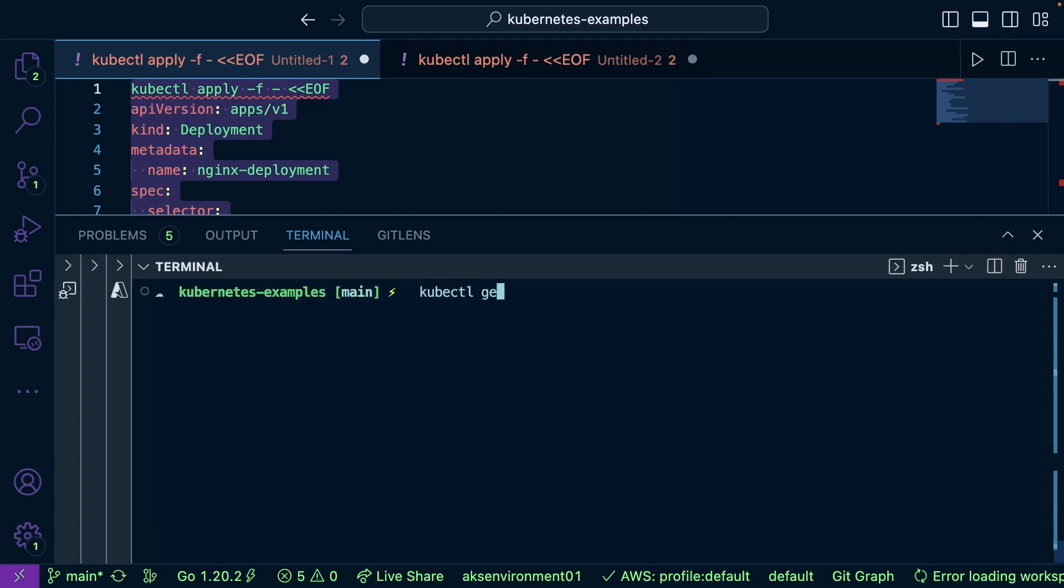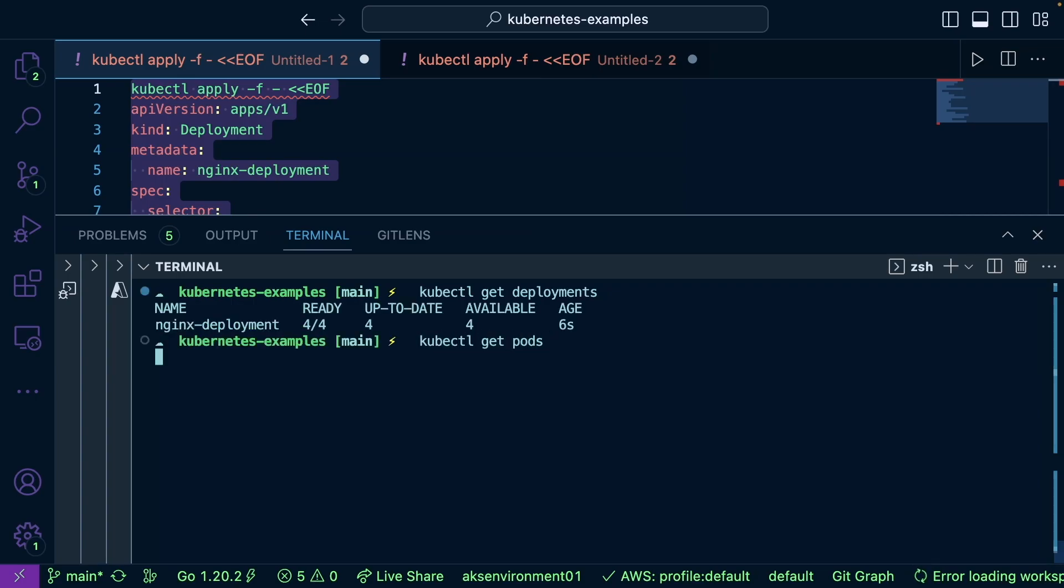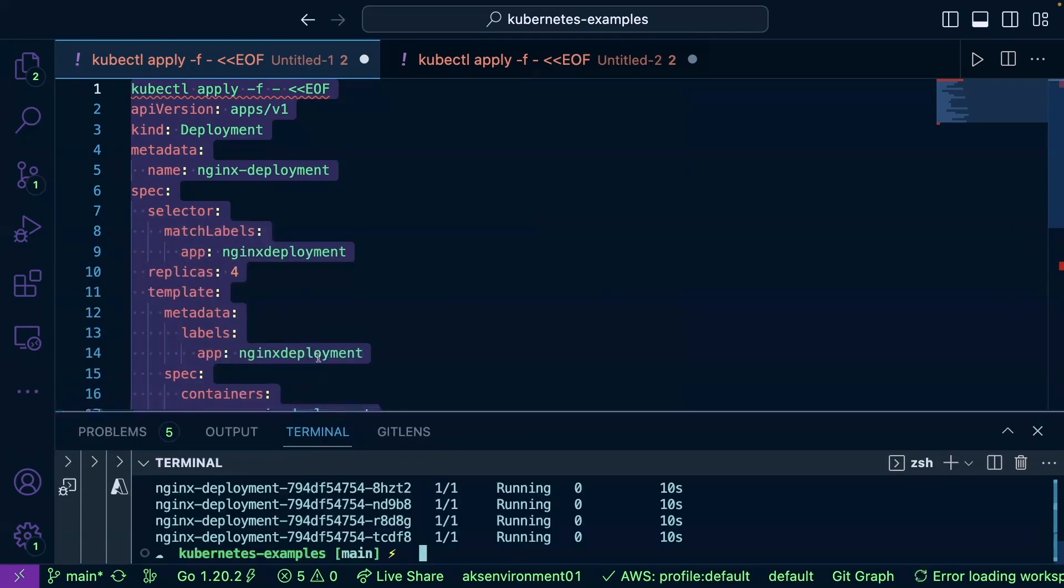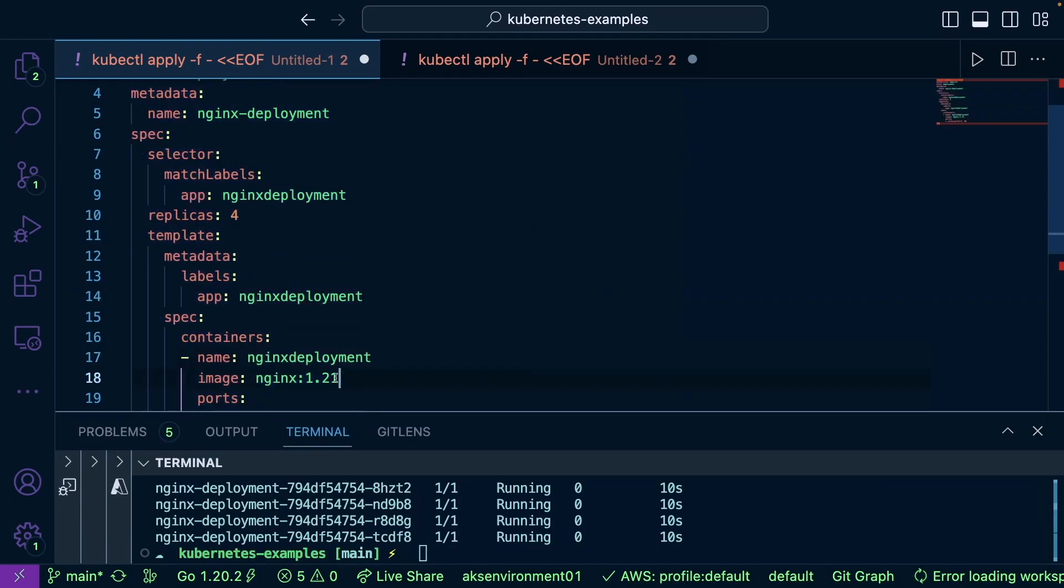We do kubectl get deployments, kubectl get pods. These are running as expected with the Nginx container image version 1.21.